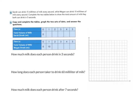Now we're going to go through the process from start to finish. Sarah can drink 15 milliliters of milk every second while Megan can drink 10 milliliters every second. We need to complete two tables to show the total amount of milk they can both drink in 5 seconds. Sarah's table: after one second she's had 15 mL, after two seconds 30 mL, after three seconds 45 mL, after four seconds 60 mL, and after five seconds 75 mL.